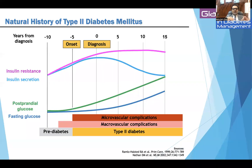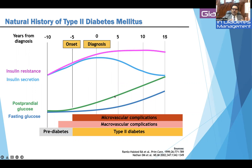An important point is the natural history of type 2 diabetes. As you can see, at the time of diagnosis, the patient has already had diabetes for about five to seven years — it was latent with no symptoms. Macro- and microvascular complications have already started even five years before diagnosis, and some microvascular complications begin in the pre-diabetes stage. So at the time of diagnosis, we should not wait further — we should treat at the first visit and be very aggressive in that treatment.